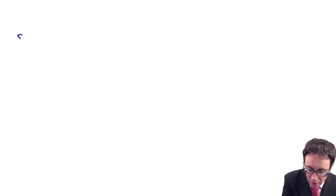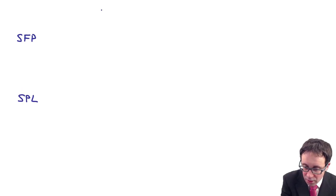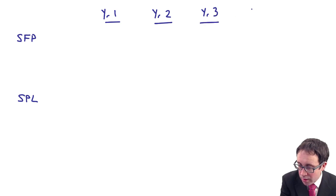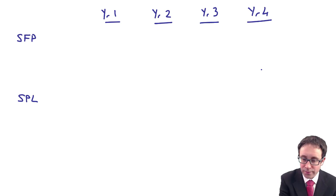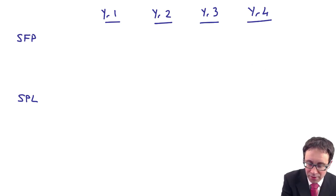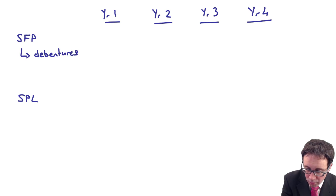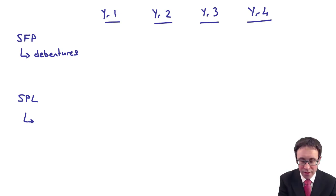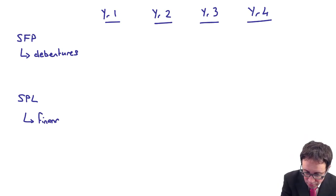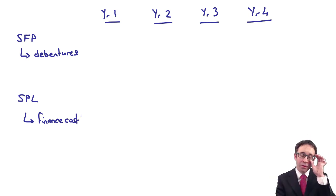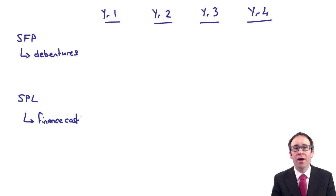Similarly to what we saw earlier with financial assets, we're going to look at the statement of financial position and the statement of profit or loss for years one, two, three, and four. On the statement of financial position, you're looking at your debentures. On the statement of profit or loss, it's no longer interest received — it is your finance cost, your interest payable. Because we are borrowing money and that borrowing involves an expense: the payment of interest.